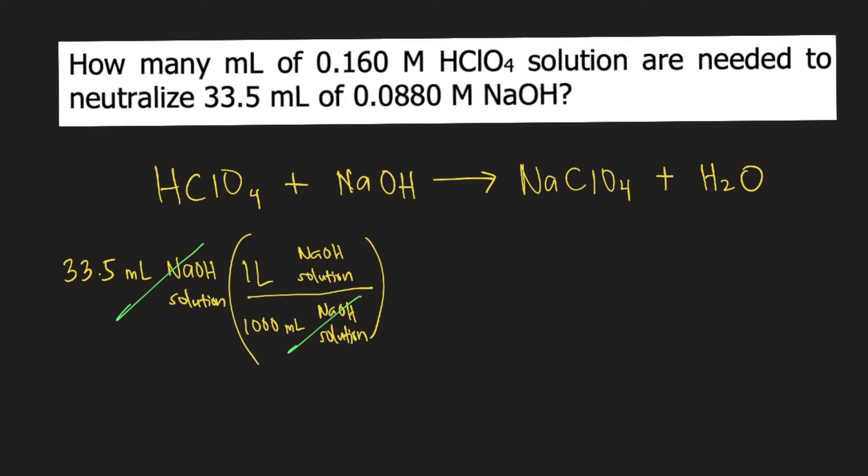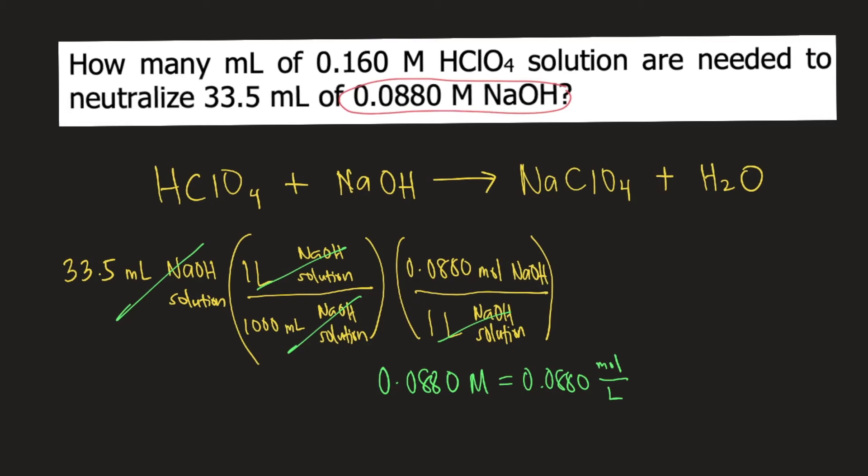In the problem, we are given the concentration of the NaOH solution, 0.0880 molar of NaOH. We know that molar is equivalent to moles per liter. So 0.0880 molar is equivalent to 0.0880 moles per liter. So we plug that into our conversion. The liters of NaOH solution contains 0.0880 moles of NaOH. So the liters of solution will cancel. Now we have moles of NaOH.